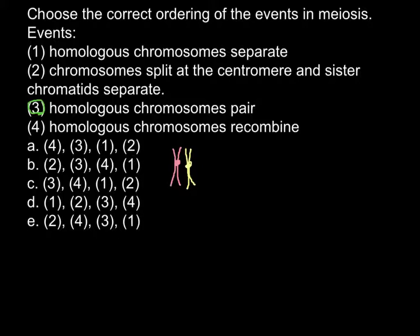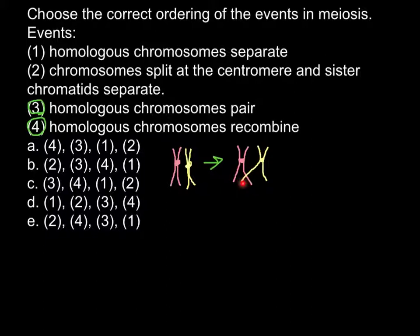The next event would be homologous chromosomes recombine — this is going to be number four. At this stage we have two homologous chromosomes, each with two sister chromatids. Two non-sister chromatids form a chiasmata complex and recombine. Sometimes this crossing over event may happen in only one place, and sometimes it may happen twice or even more.